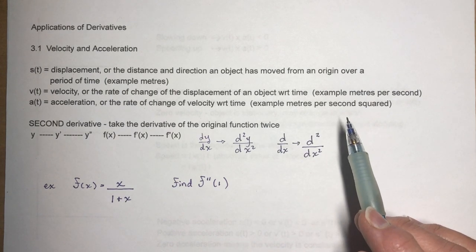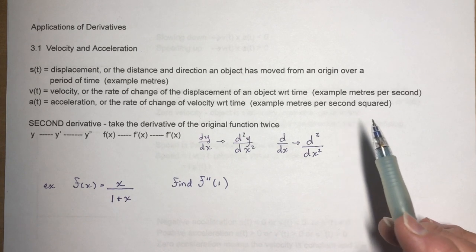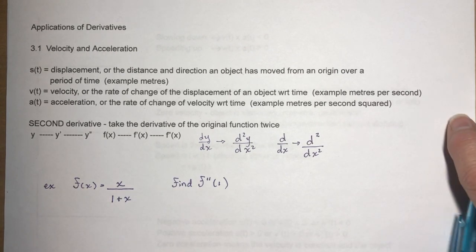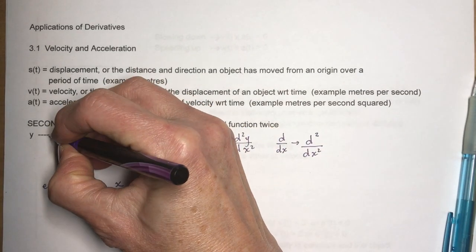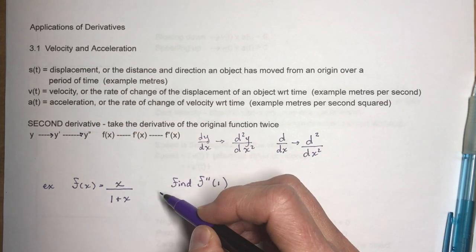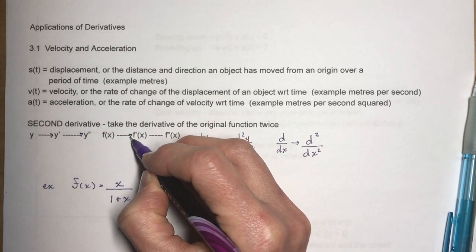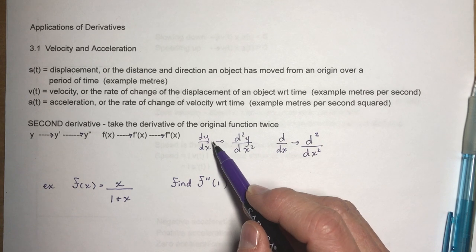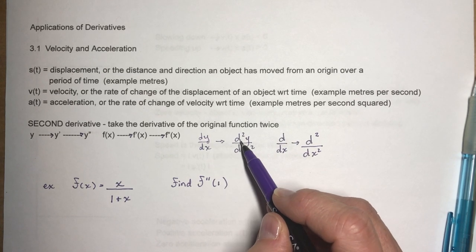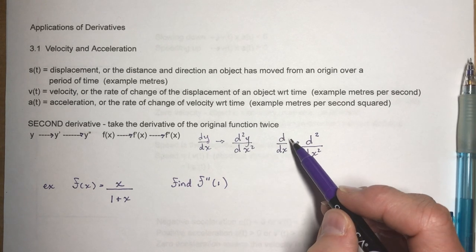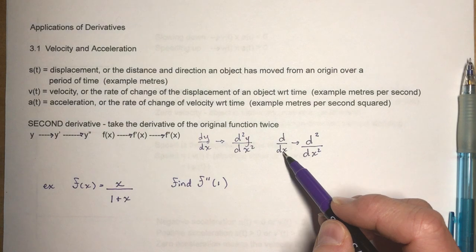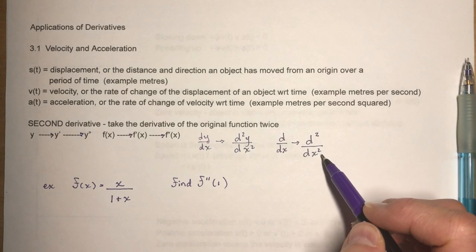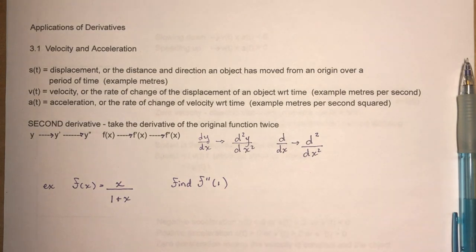We're going to look at how you take a second derivative, which is basically just taking the derivative of a derivative. So if we had the function y, it would go to y-prime for the first derivative, and the second derivative would be y double-prime. In f(x) notation, it's f-prime(x) and f double-prime(x). In Leibniz notation, dy/dx is the first derivative, and d²y/dx² is the second derivative. It doesn't mean you're squaring anything — it just means you're taking the second derivative.